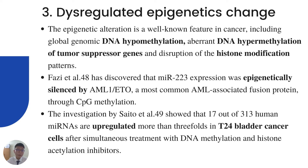For the third mechanism, dysregulated epigenetic changes such as DNA hypermethylation of tumor suppressor genes and histone modification can cause cancer development. It has been discovered that miR-223 expression was epigenetically silenced by an AML-associated fusion protein through CpG methylation.